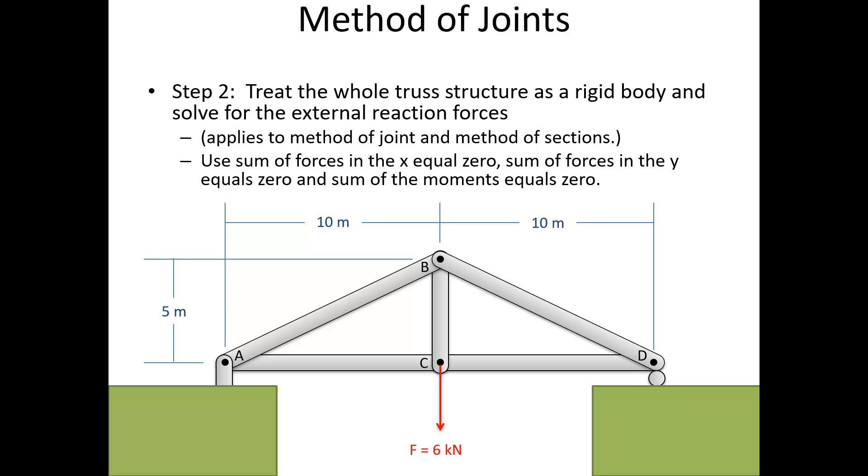Step two is going to be to treat the whole truss as a rigid body and solve for the external reaction forces. So I'm going to treat this whole triangle shape as a rigid body, and I want to find the force in the x and the y over here. I've got a roller joint over here to model a thermal expansion joint. I would have just a force in the y direction over here. So it's just a rigid body. We're going to use the sum of forces in the x equals zero, sum of forces in the y equals zero, and the sum of moments about some point, probably point A, equals zero. So I should be able to solve for those reaction forces.